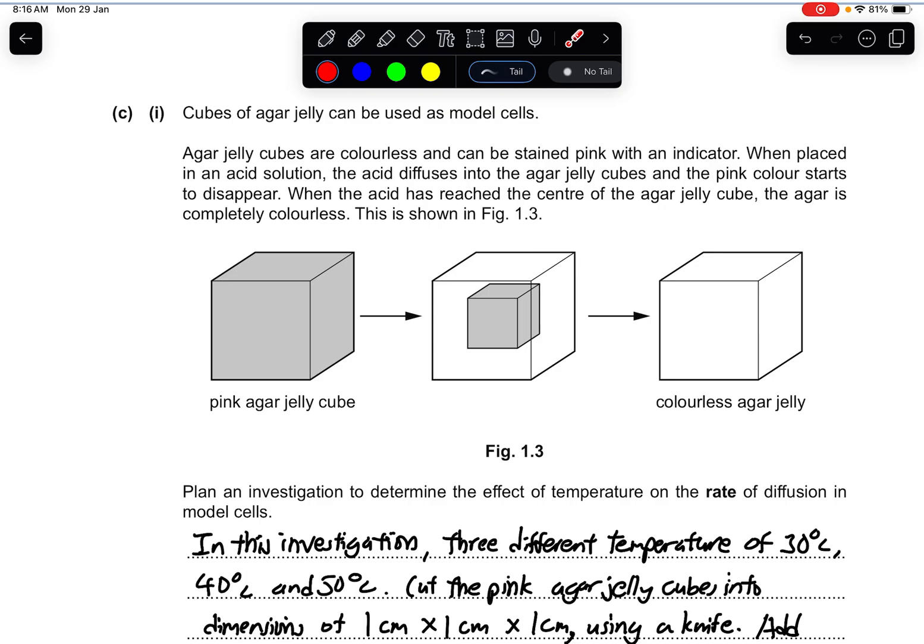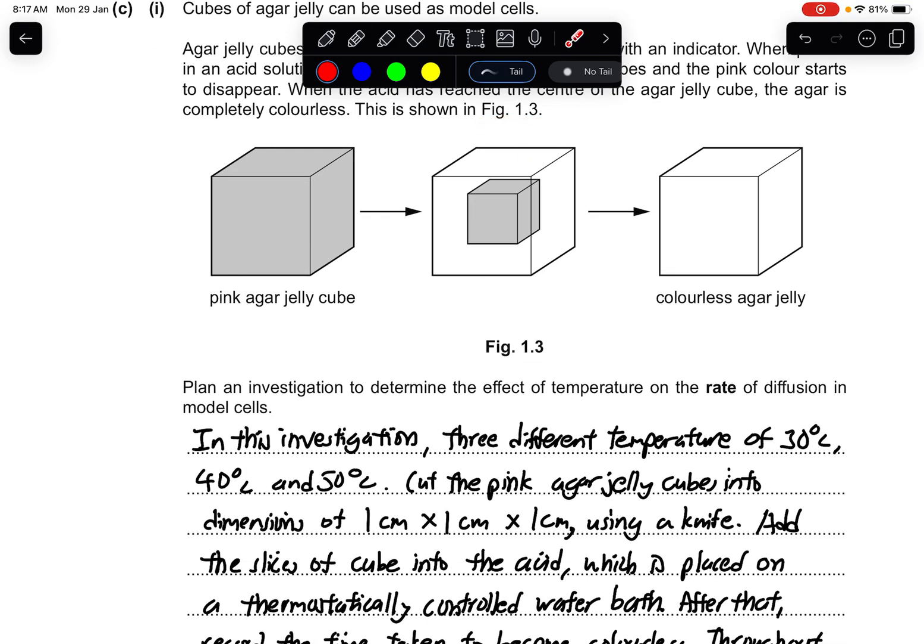Part C: cubes of agar jelly can be used as model cells. Agar jelly cubes are colorless and can be stained pink with an indicator. When placed in an acid solution, the acid diffuses into the agar jelly cubes and the pink color starts to disappear. When the acid has reached the center of the agar jelly cube, the agar is completely colorless. This is shown in figure 1.3.